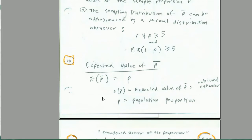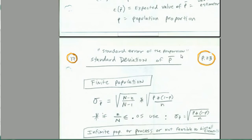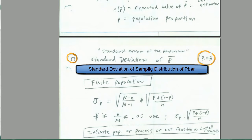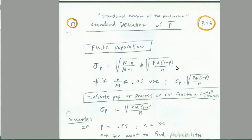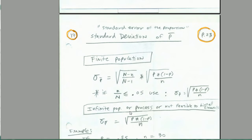If both of those are true, then we can use the normal distribution. The expected p-bar equals the population proportion. The standard error of the proportion, or standard deviation of p-bar, is the square root of p times (1 minus p) divided by n. And there's the correction factor — the same rule applies: if sample size divided by population size is less than or equal to 0.05, we do not have to use the correction factor.